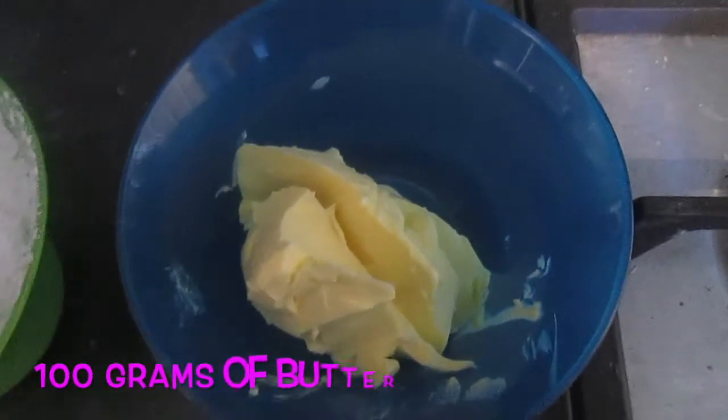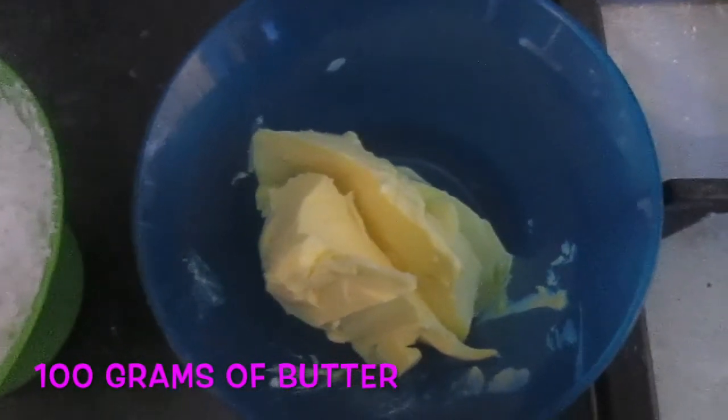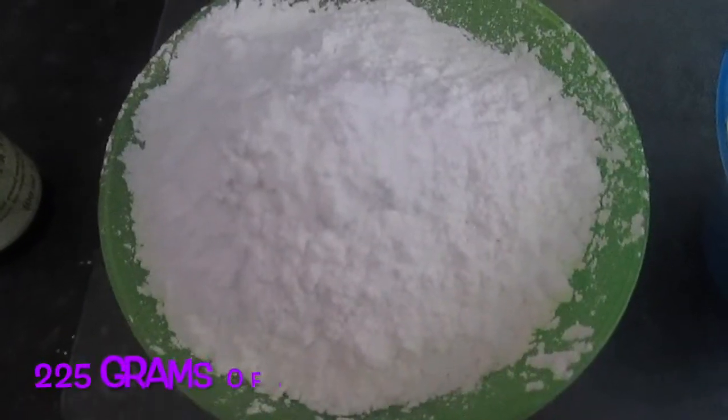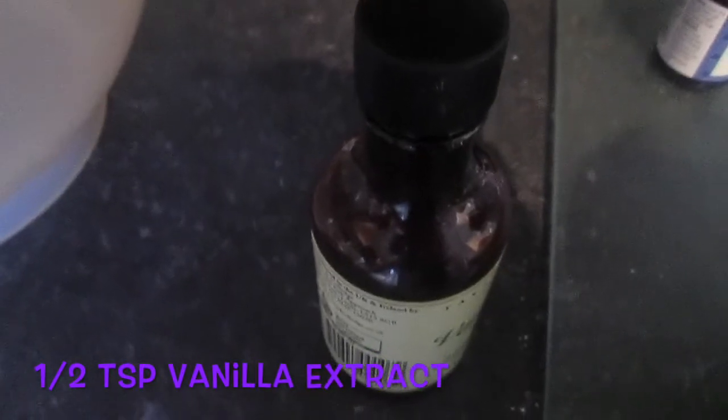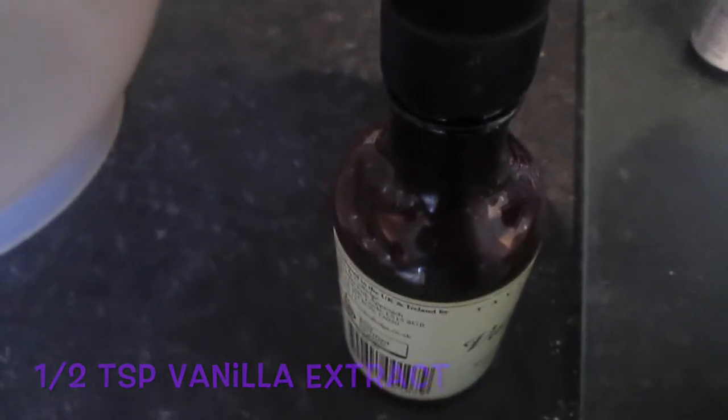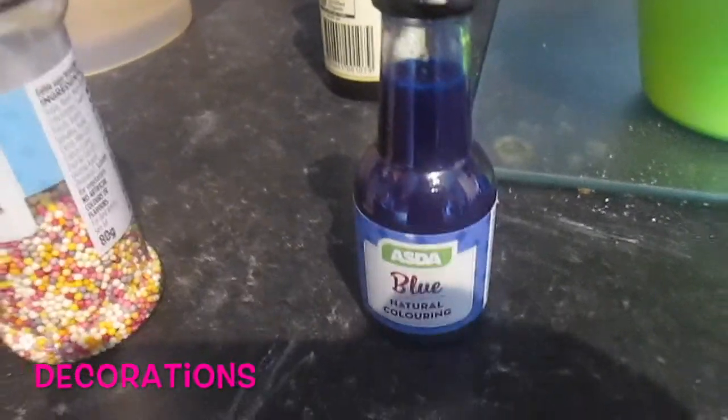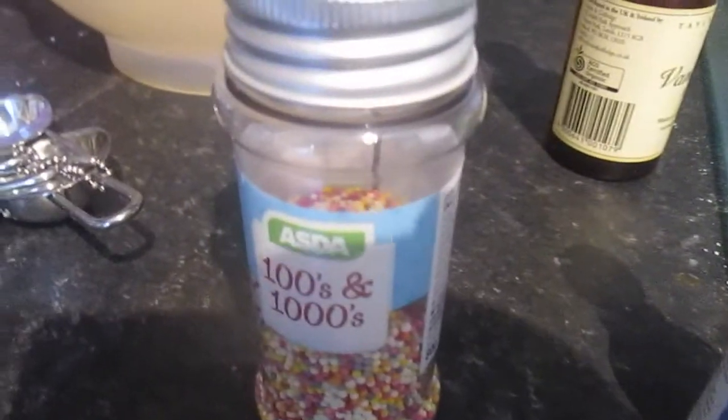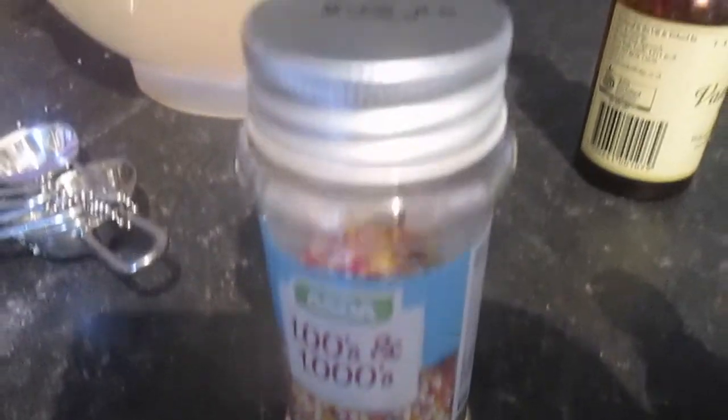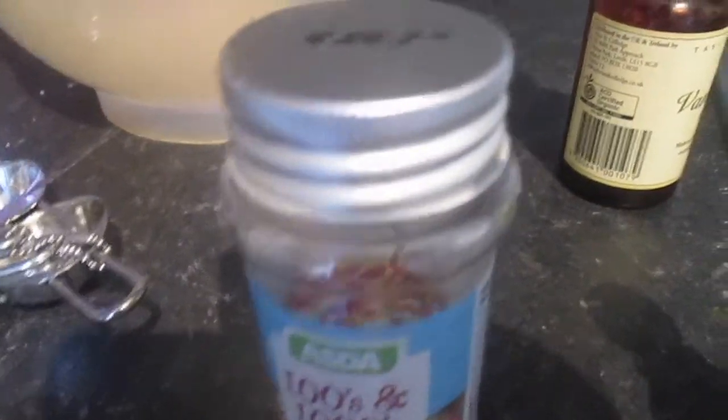Okay, here are the ingredients to make your icing: 100 grams of butter, 225 grams of icing sugar, half a teaspoon of vanilla extract. Today I decided to decorate them with some blue food coloring and some hundreds and thousands. And now that we've got our ingredients, let's make the icing.